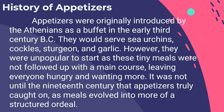Appetizers were originally introduced by Athenians as a buffet in the early 3rd century BC. They would serve sea urchins, cockles, sturgeon, and garlic. However, they were unpopular as these tiny meals were not followed up with a main course, leaving everyone hungry. It was not until the 19th century that appetizers truly caught on as meals evolved into a more structured format. The ancient Romans and Greeks are depicted lounging with trays of fresh fruit, wine, olives, and cheese.